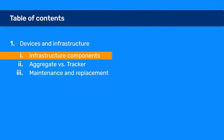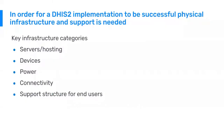I will start with the infrastructure components. In order for a DHIS2 implementation to be successful, physical infrastructure and support is needed. The key infrastructure categories to consider when planning and maintaining a DHIS2 implementation are: servers and hosting, devices, electricity and power, connectivity, and support structure for end users. Support structure for end users is not infrastructure per se, but it's closely linked to making the rest of it work.